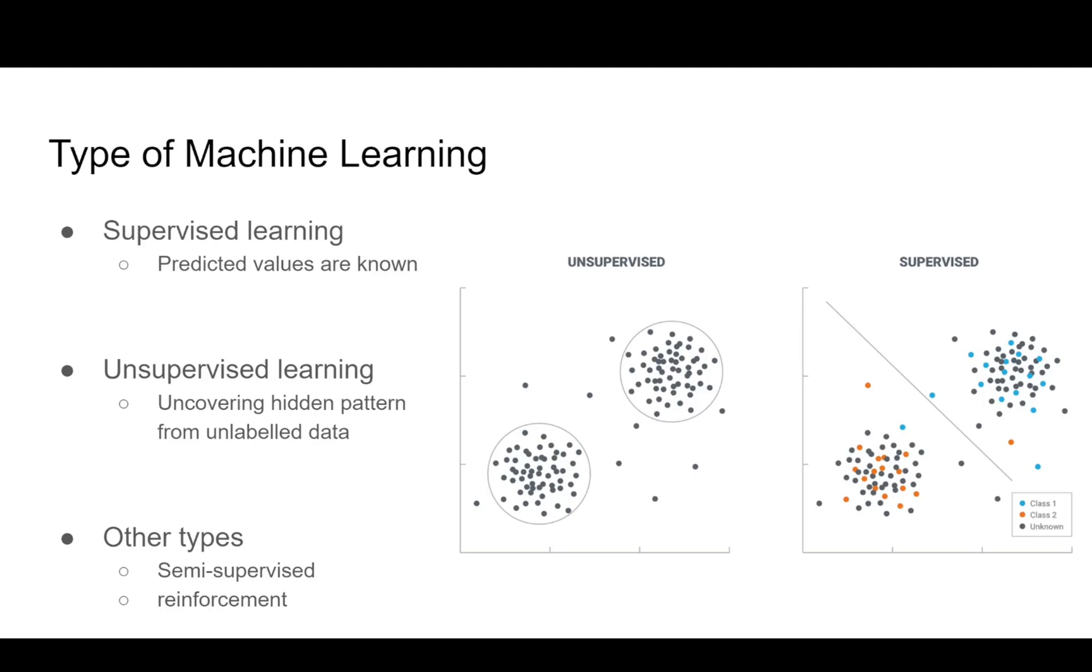First of all, I want to talk about the types of machine learning. There are two popular types: supervised and unsupervised. There are other types as well, known as semi-supervised and reinforcement, but these are not that popular, so I'm only going to talk about supervised and unsupervised.